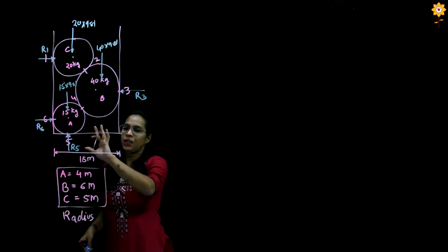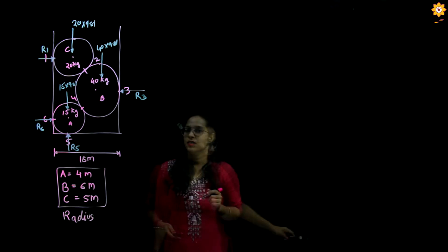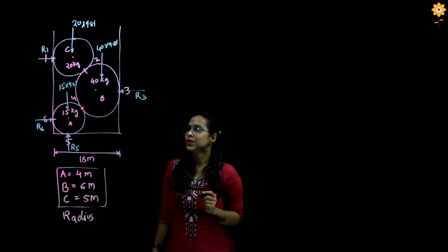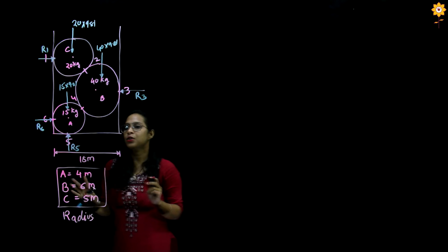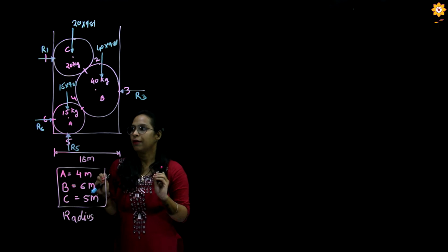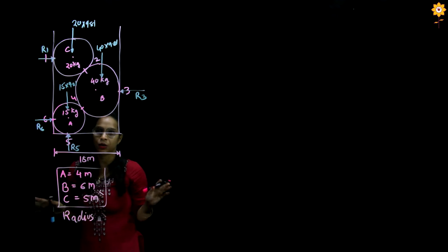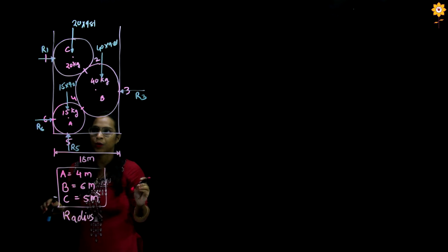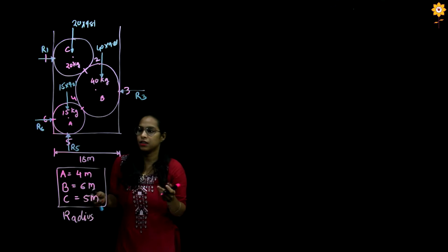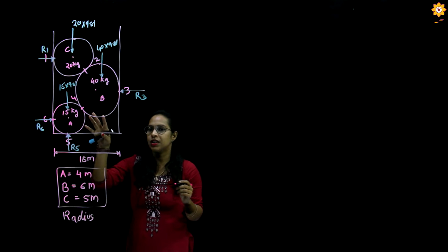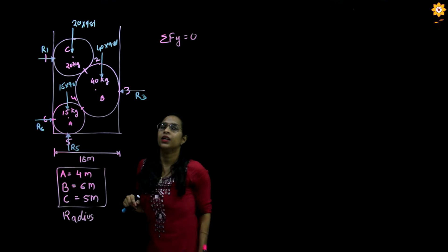This is the complete free body diagram considering the whole setup as a single system. We will solve for equilibrium. For f of x, we have R6, R3, and R1 — all unknown — so there's nothing to relate. Instead, we'll go for f of y equals 0.